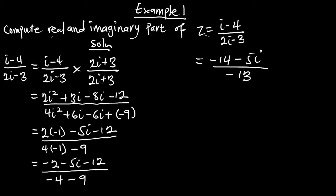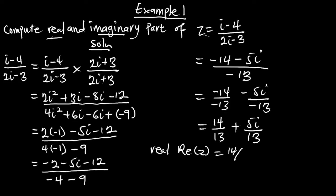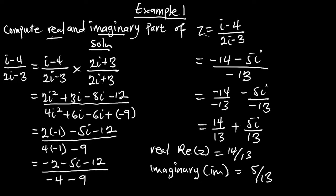To get the real and imaginary parts: the real part is the portion without i, which is negative 14 on negative 13, and the imaginary part contains i, which is negative 5i on negative 13. Therefore z equals 14/13 plus 5i/13. We conclude that Re(z) = 14/13 and Im(z) = 5/13. This is the solution for this expression.